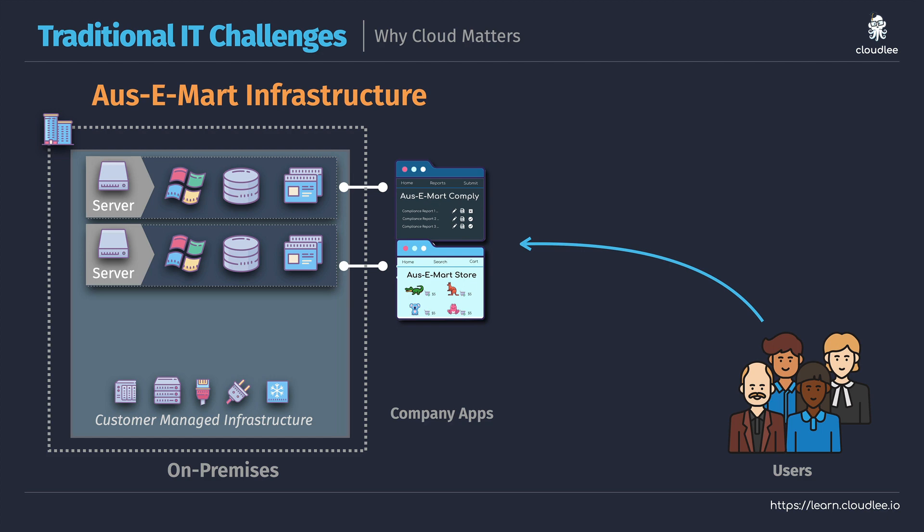All of this is currently hosted on their on-premises, customer-managed infrastructure. The OzzyMart team could have used a data center provider, but the key point is that the IT team have had to set up servers, operating systems, applications, and a range of other infrastructure to support all of this — storage, networking, power, cooling. These are the sorts of things we have to manage traditionally before we were able to use cloud.